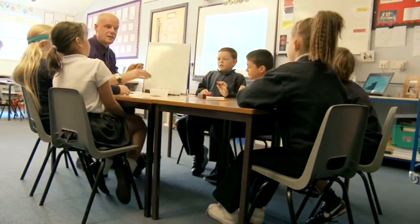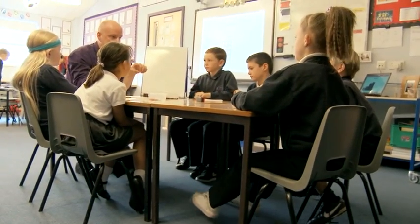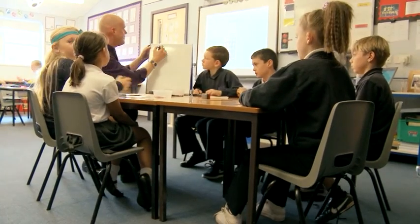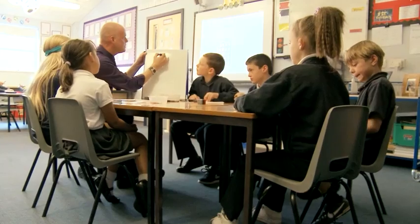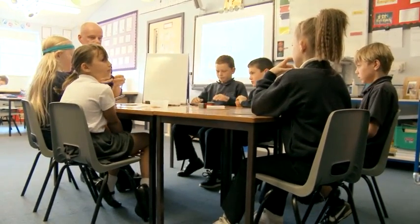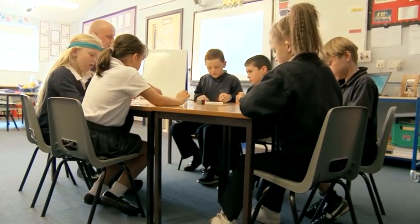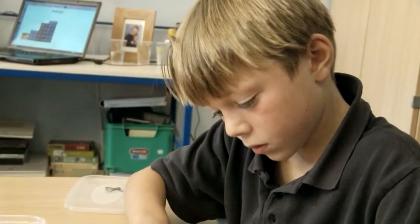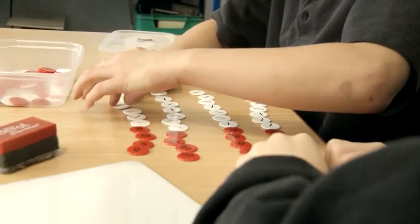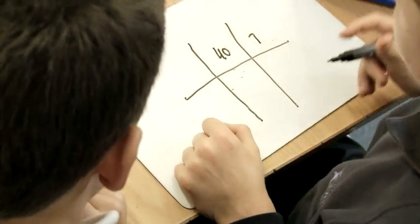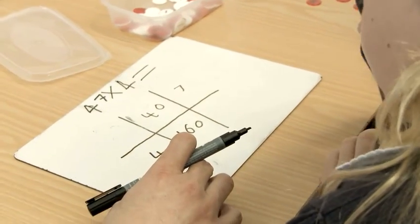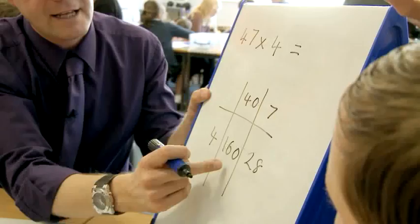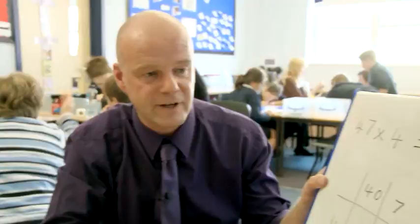What I would like you to have a go at now — I'm going to let you do this independently. I want you to make the array with the counters, and then record your jottings as you go in that grid. Have a go at 47 multiplied by 4. Make the array first. And what is 4 lots of 7 multiplied by 4? 28. Brilliant. Let's just go through that together — what answer did we come up with? Alfie? 188. Excellent, well done.